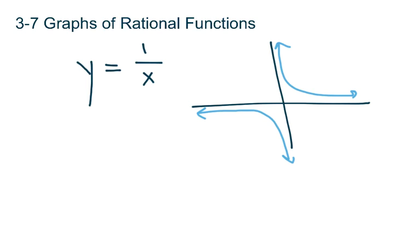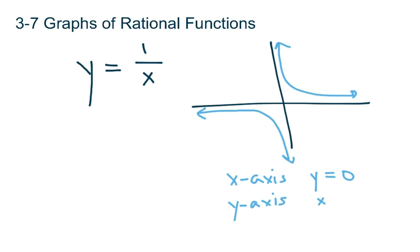And they had these things called asymptotes, which were lines that the graph gets closer and closer to, but never actually touches. The asymptotes of the parent function were the x-axis, which is the line y equals 0, and the y-axis, which is the line x equals 0.